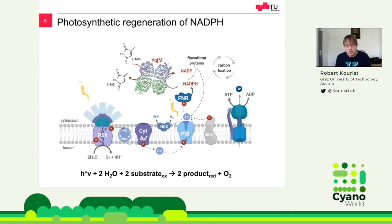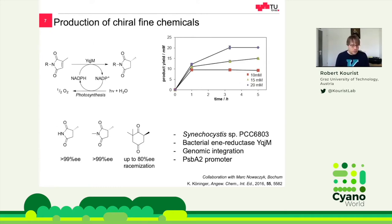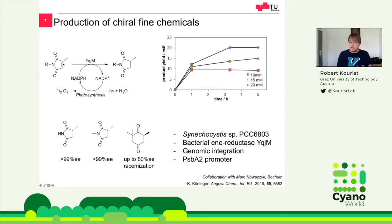If we have a fast reaction, we add an additional electron sink to the metabolism of cyanobacteria. We made a feasibility study — we expressed a gene called YQJM, a double bond reductase. Here you see product formation over time: 10, 15, 20 millimolar. With a low optical density, we could convert the compound within a few hours, which was really exciting. The ee value — enantiomeric excess — means we produce only one of the two stereoisomers, so this reaction is really highly selective. This is also an indication that our enzyme does the job.